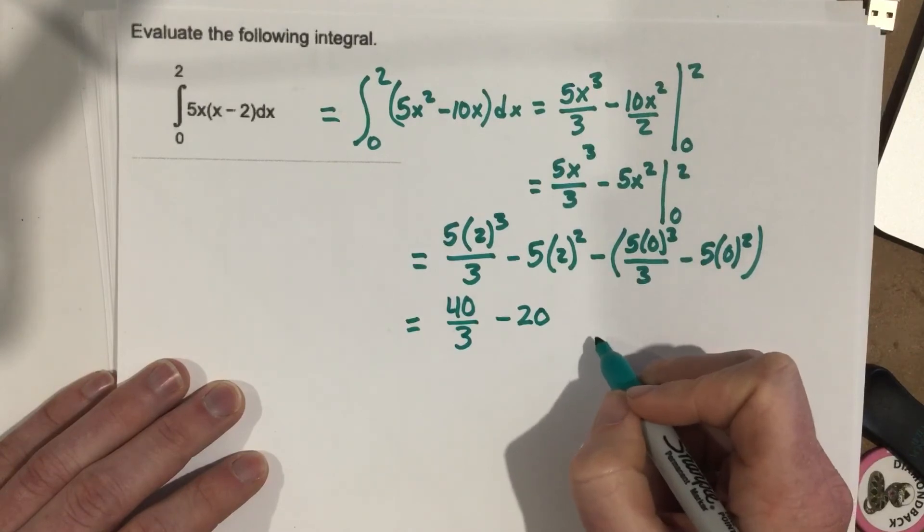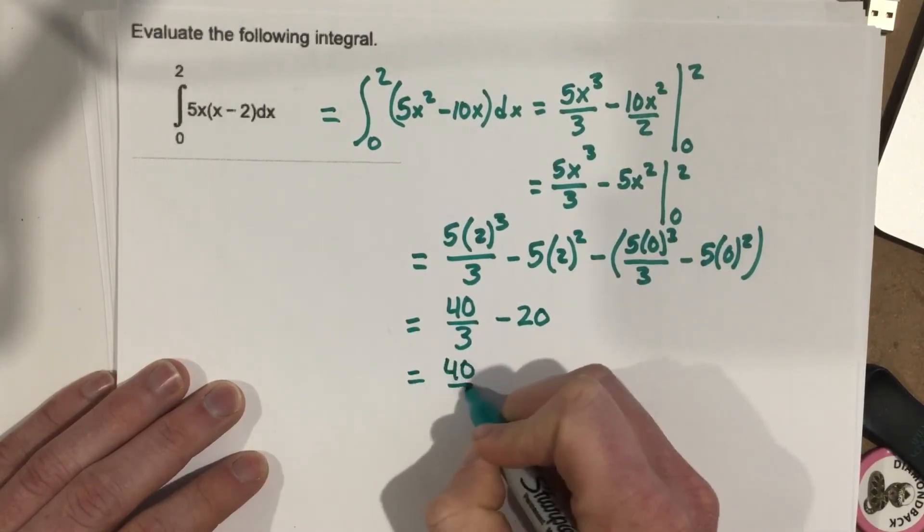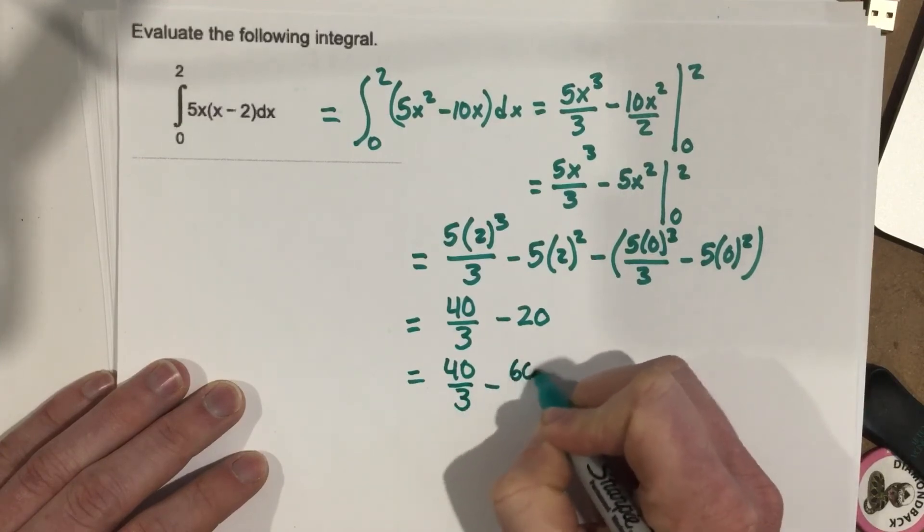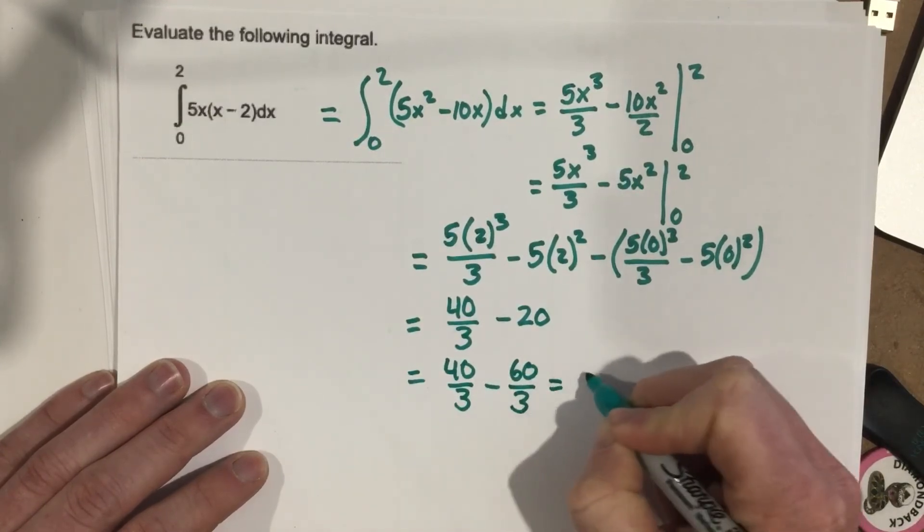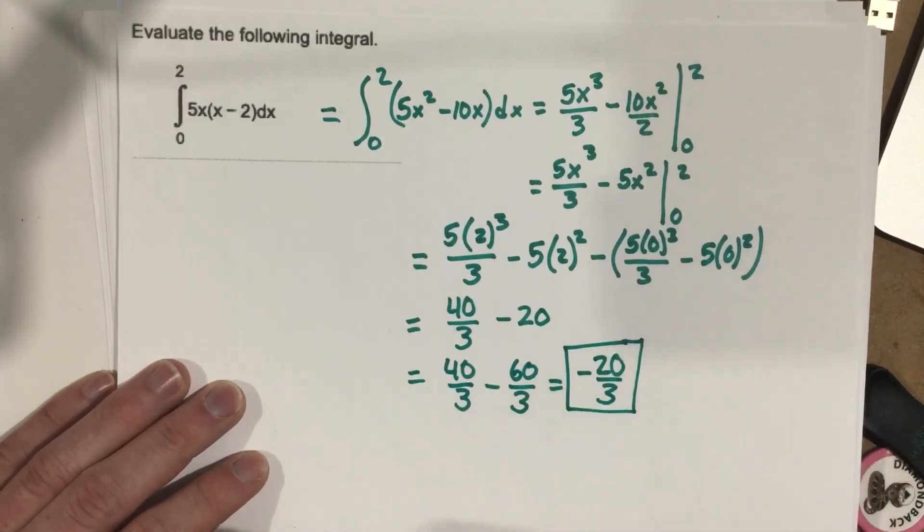So I don't even need to write that. Let's find a common denominator here, 40 over 3, minus 60 over 3, gives you negative 20 over 3. That's our answer.